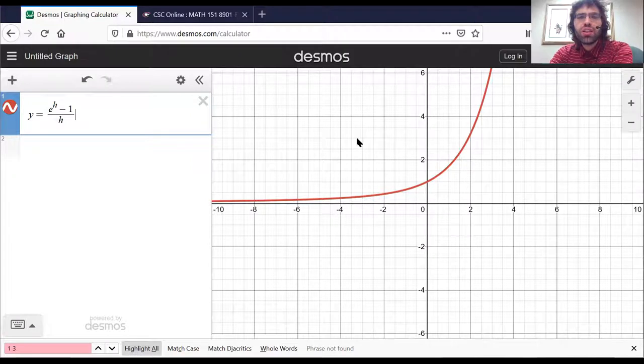Here's e to the h minus one over h. And as h goes to zero, we really do approach one.